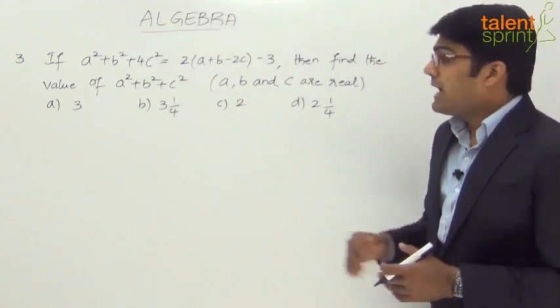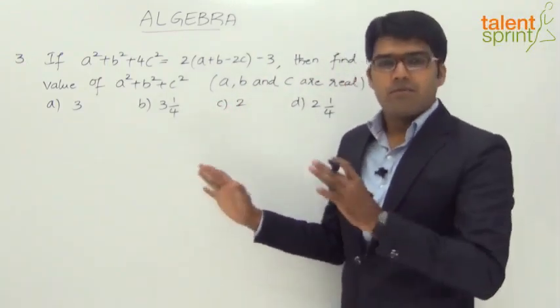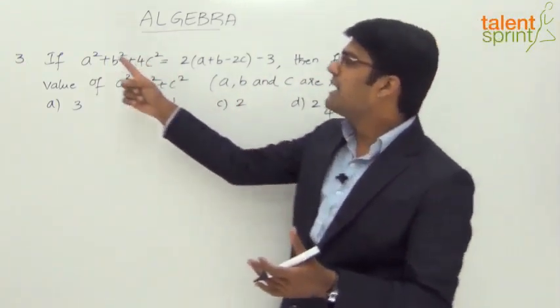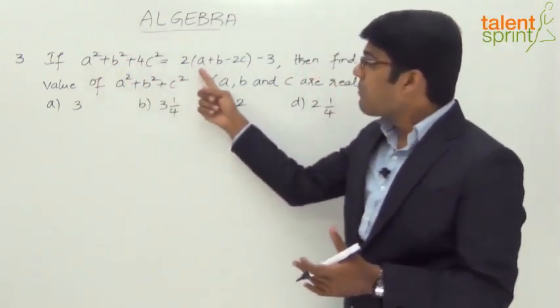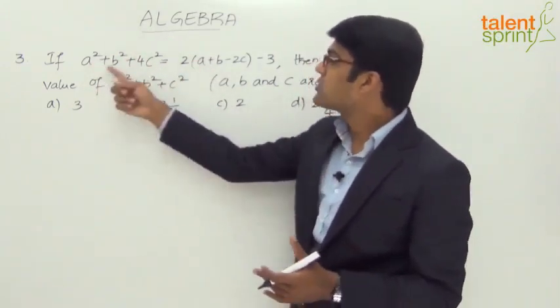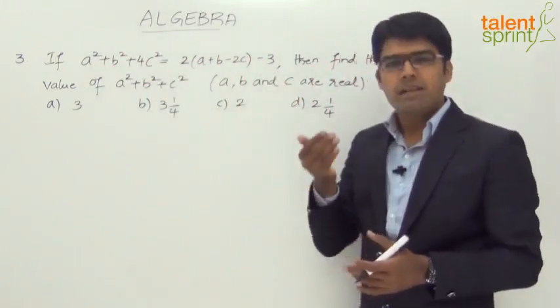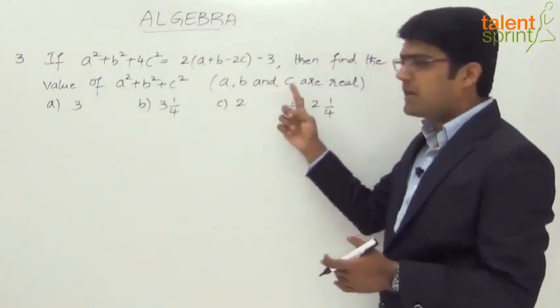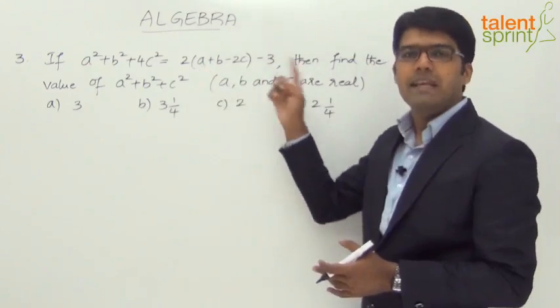I need not write each and every step here. If you have the right idea, you would know that we have a² minus 2a. Take it to the other side: a² - 2a + 1. This minus 3 will become minus 1, minus 1, minus 1—one each for a, b, and c.